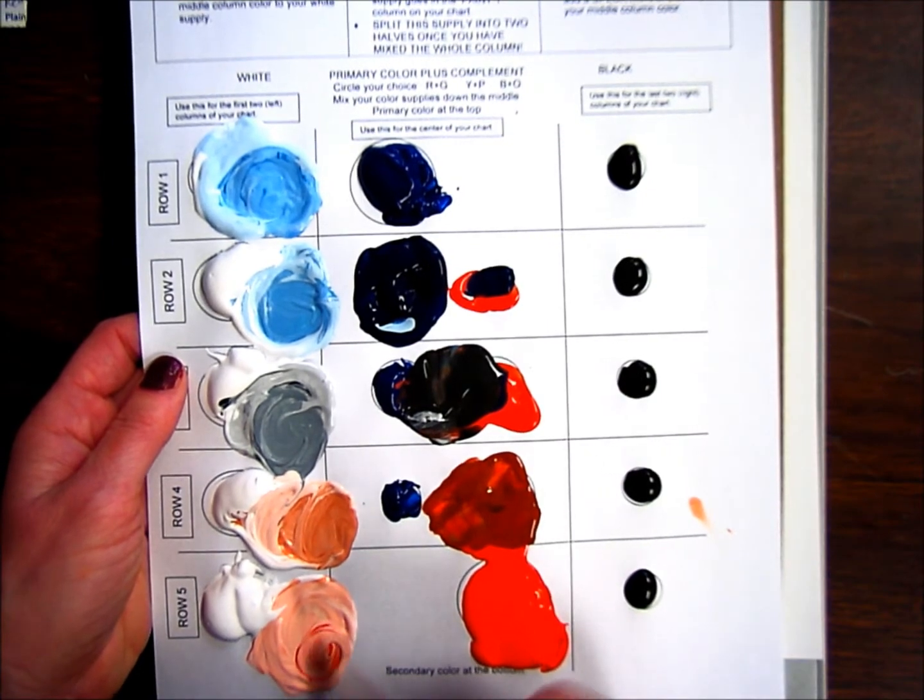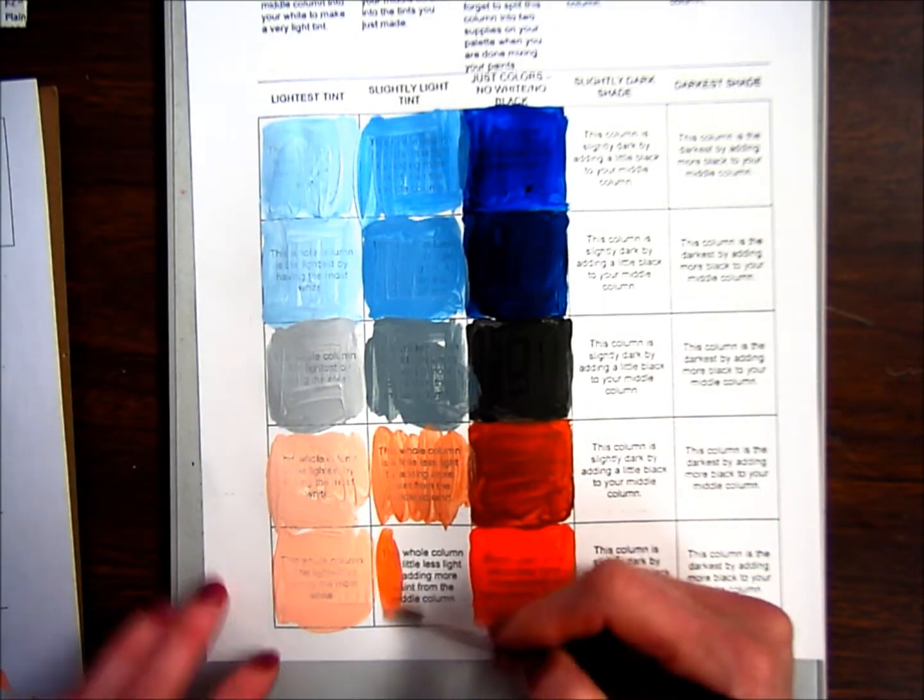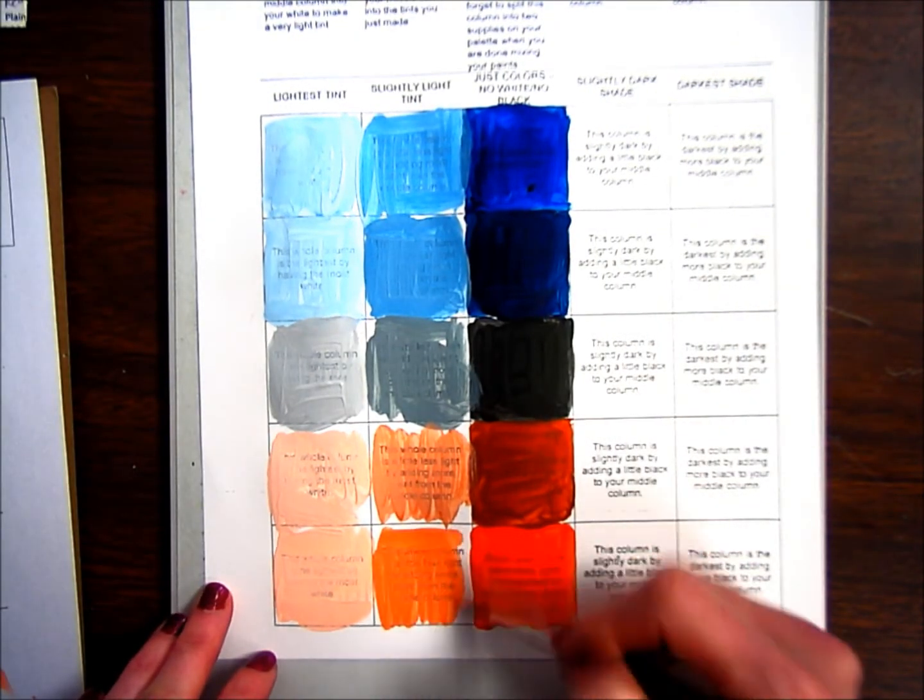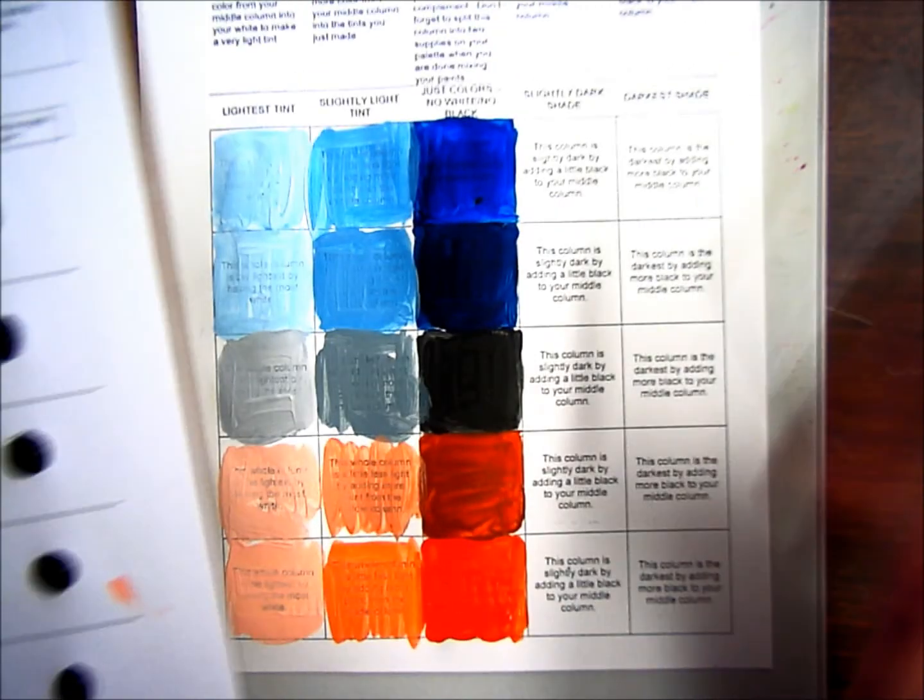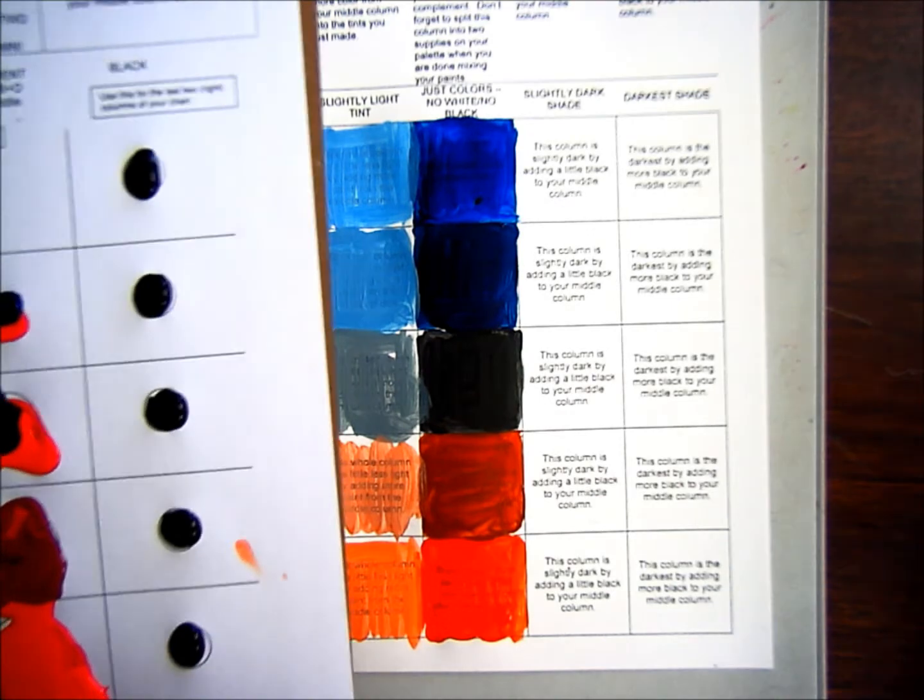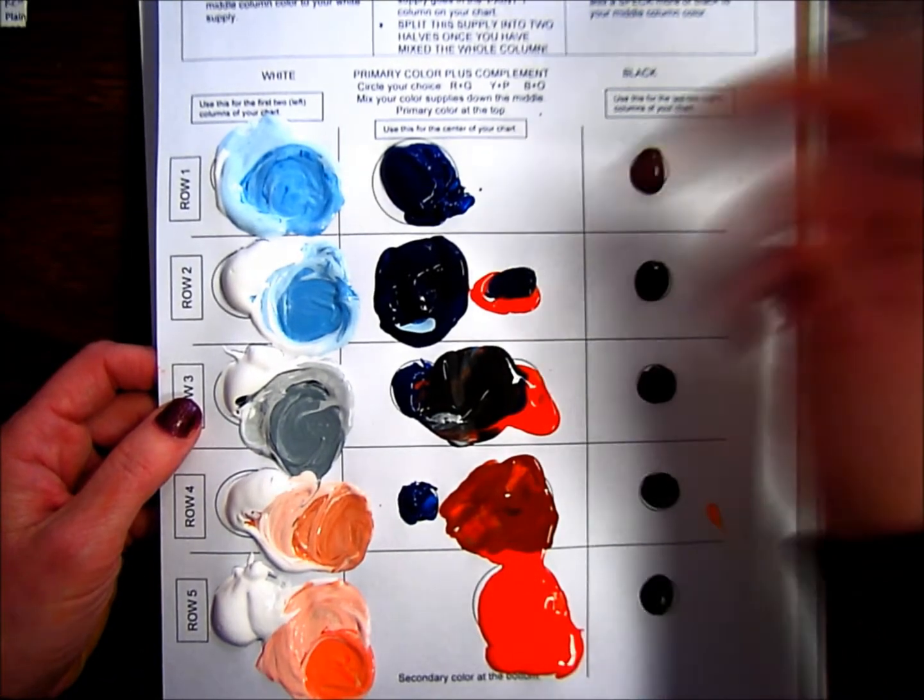Okay, and this is the last time we're going to be using the white on this page, this painting. And there we go. Okay, now we're going to work only on this side. We're going to be adding black to our color supply. So here's black. We're going to actually put the black into there.